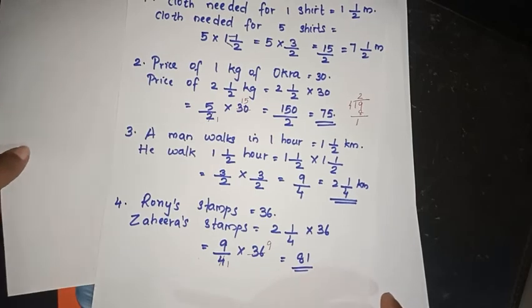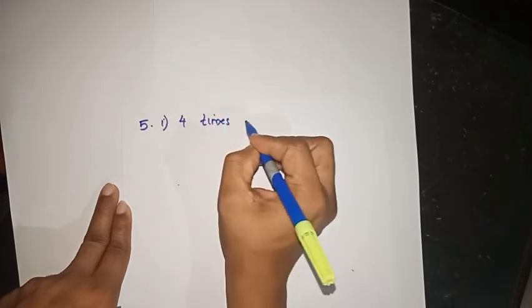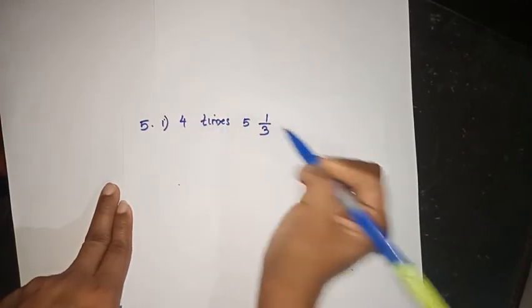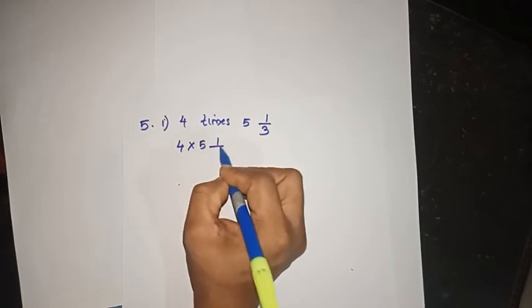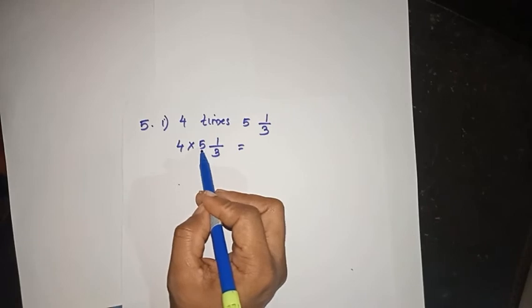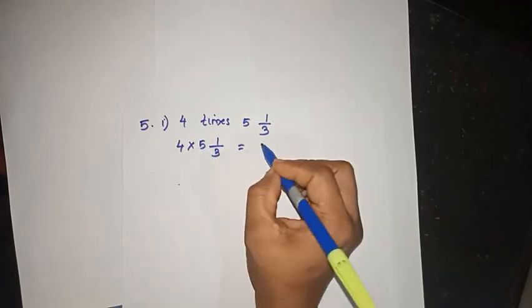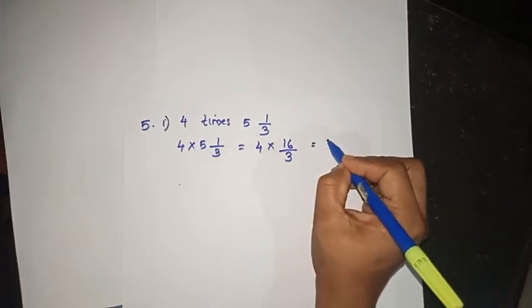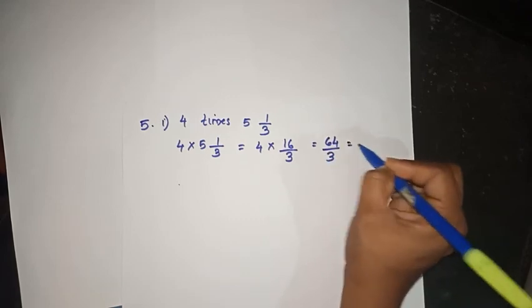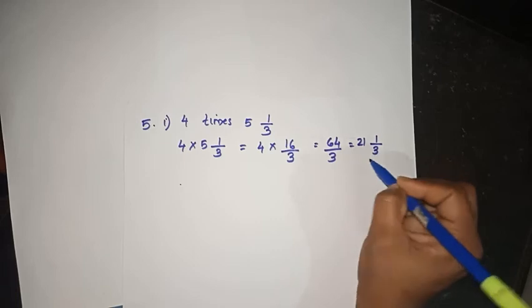The 5th question: calculate the following. First: 4 into 5 and 1 by 3. Convert 5 and 1 by 3: 5 times 3 is 15, plus 1 is 16 — so 4 into 16 by 3 equals 64 by 3, which is 21 and 1 by 3.